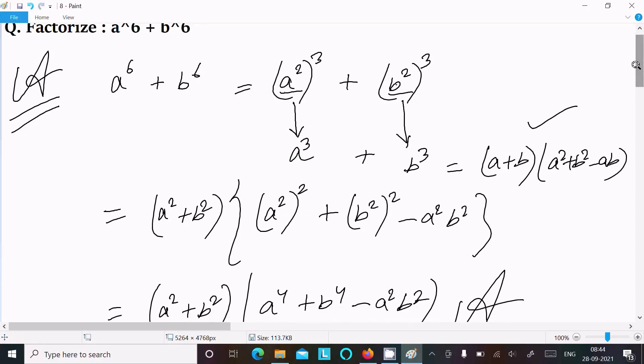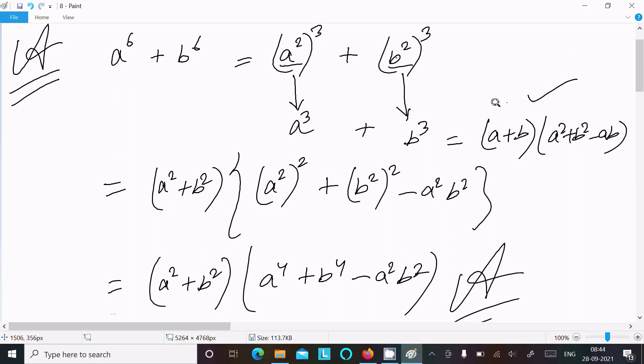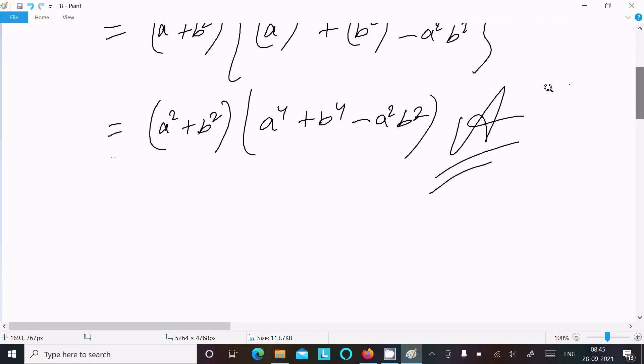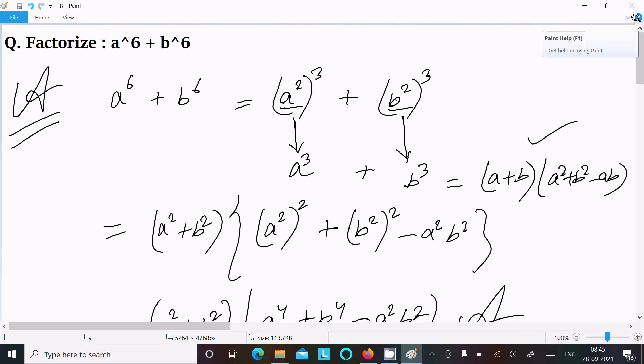And after that to put here this is a and this is b, so a^2 plus b^2, use this formula. And after doing that here you can get this all. So this is the way we can do the factorization of this polynomial.